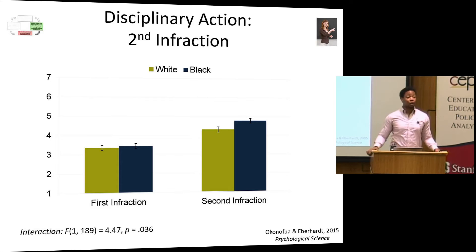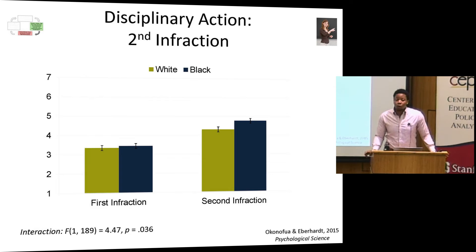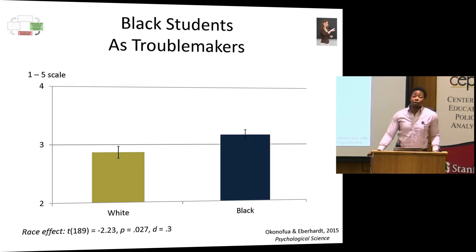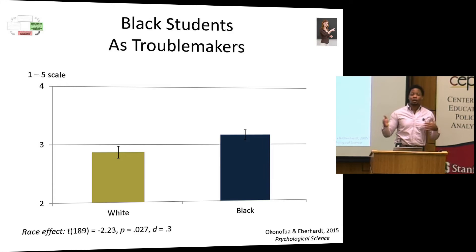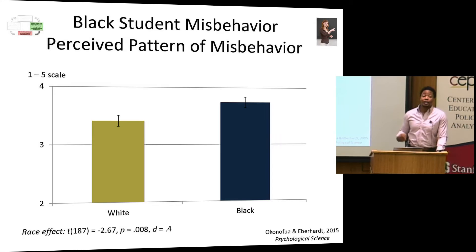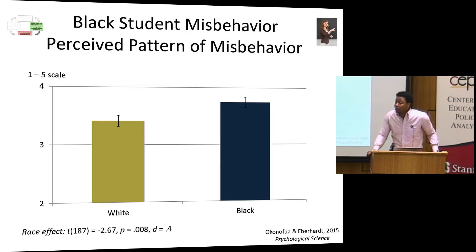Teachers can discipline children differently according to their race, but we wanted to know why. Is it a stereotyping process? I also asked teachers how likely they would be to label the child a troublemaker — they were much more likely to do so if the child was black. Then I asked to what extent the student's misbehavior was indicative of a pattern. They were more likely to feel it was a pattern if the child was black. This shows that in this context, a large function of stereotypes is that they serve as glue that sticks two unrelated incidents together and makes it look like a larger growing pattern.